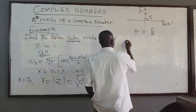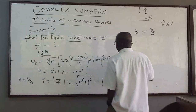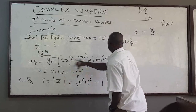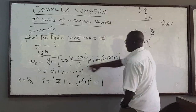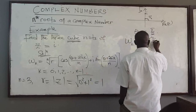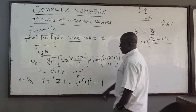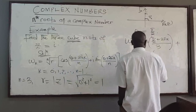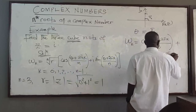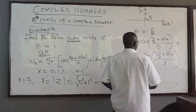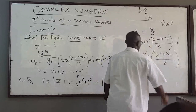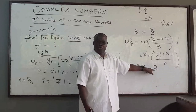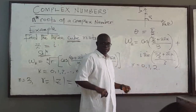The general formula to find the cube root is: r is 1, n is 3, so the coefficient is 1. We get cosine of (pi over 2 plus 2 pi k) all over 3, plus i sine of (pi over 2 plus 2 pi k) all over 3, where k equals 0, 1, and 2. Plugging in each value of k gives the three cube roots of the complex number z equals i.